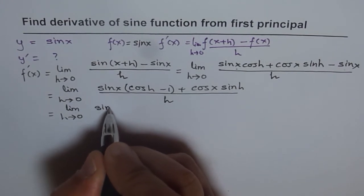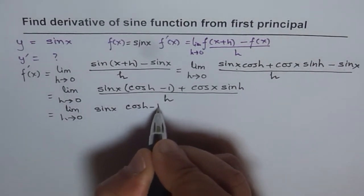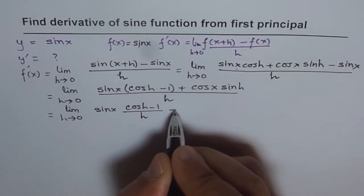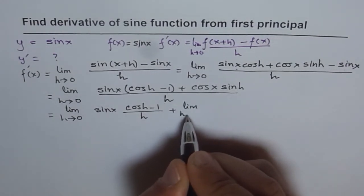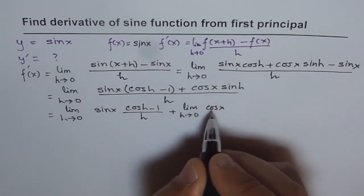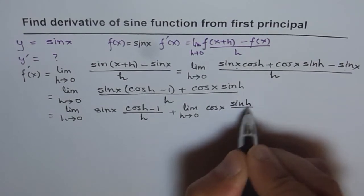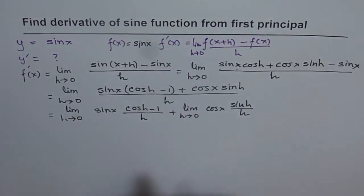Sine x, first term cos h minus 1 over h, plus limit h approaches 0, first term cos x. It is independent of h, so I am writing separately. And we have here sine h over h. So that is what we get.